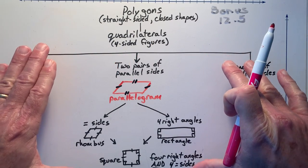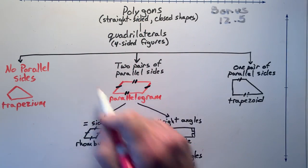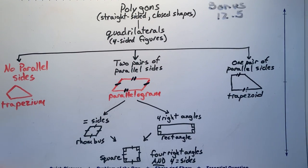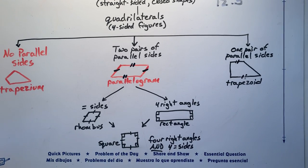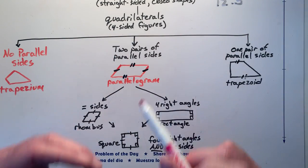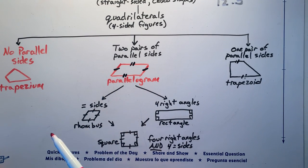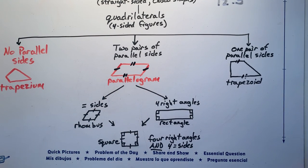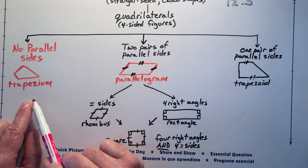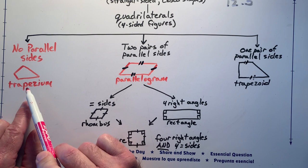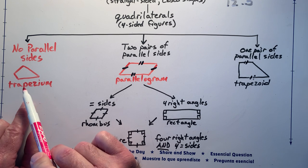Everything that is on this chart is a four-sided figure. So now we move along from quadrilaterals, and everything below quadrilaterals is four-sided. We're going to talk about the types of sides they have. The first one we're going to discuss is the trapezium. I put it in red because it is a bonus word — you do not have to know what a trapezium is for third grade.